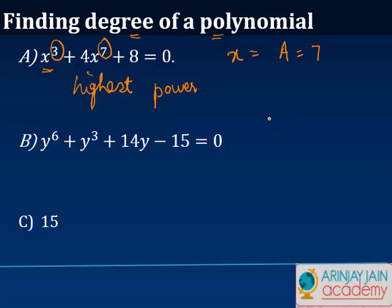Similarly, when I look at scenario B, we have y⁶ + y³ + 14y - 15 = 0. What is the variable here? The variable is y.